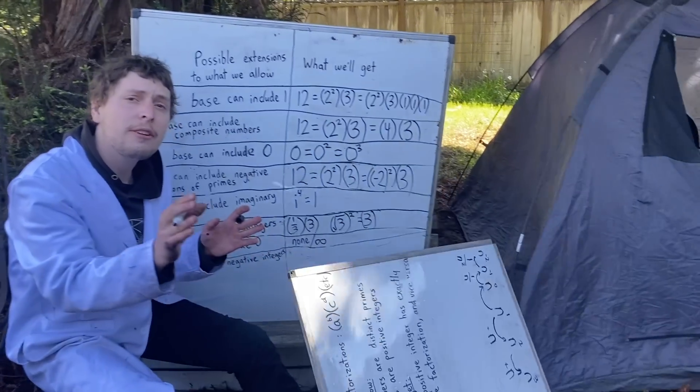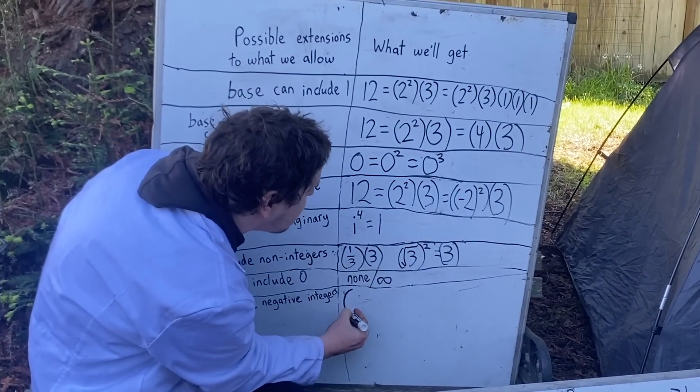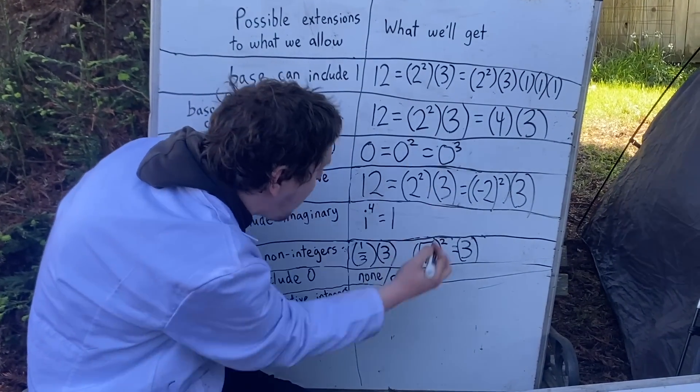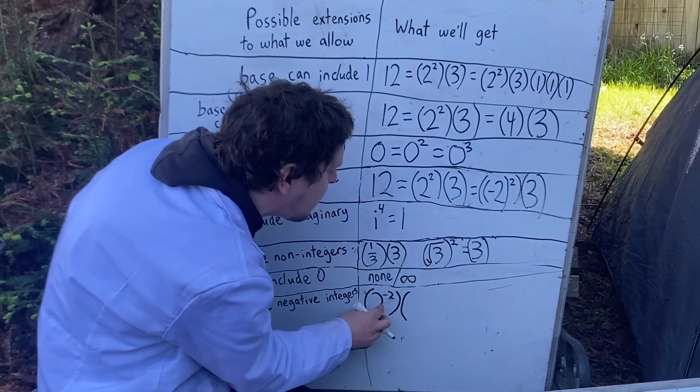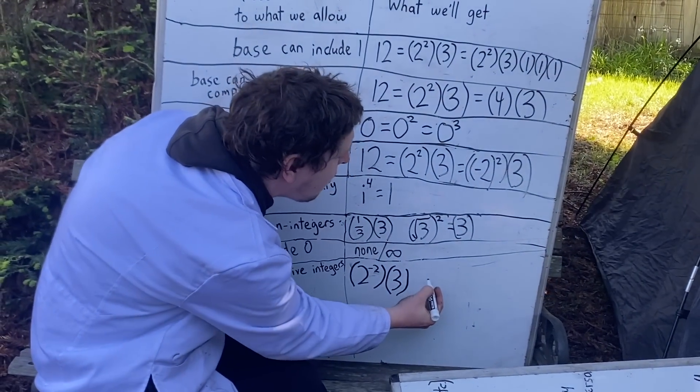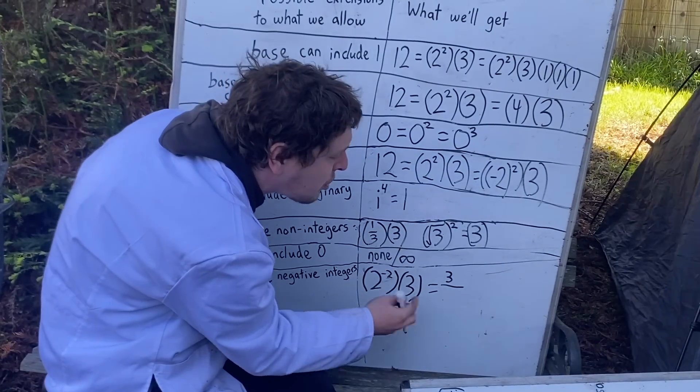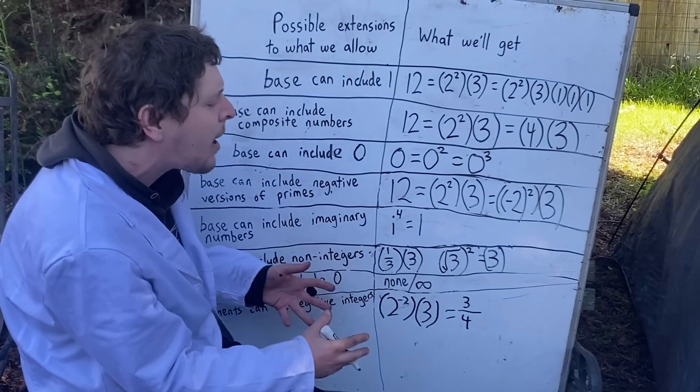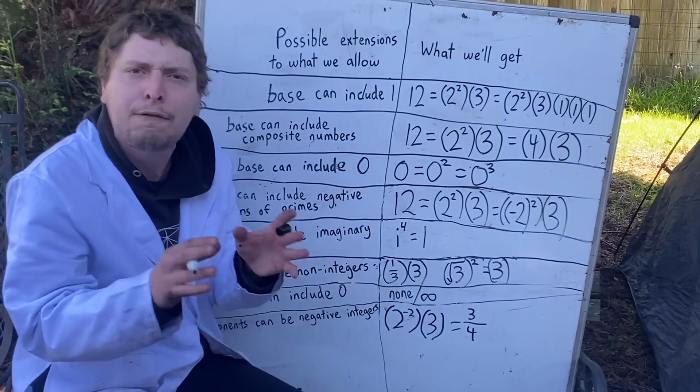If you were investigating this, you might test some previous prime factorization we'd had, like that one for 12, and turn one of the positive exponents negative. Like let's see what 2 to the negative second power times 3 would give us. Well, that would turn into 3 divided by 2 squared, which is 4. That seems to be a prime factorization of the fraction 3 fourths.